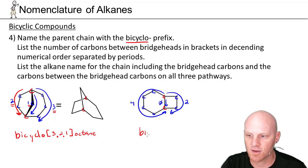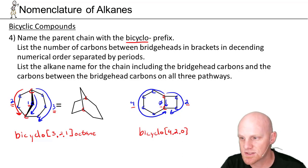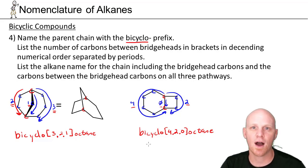If we look at this one over here, this is again, start off by saying bicyclo. And in this case, we've got four, two, and zero. So four, period, two, period, zero in brackets. And then four plus two is six, plus zero is still six, and the two bridgeheads give eight. So this is also a form of bicyclooctane. And your overall name is bicyclo[4.2.0]octane.